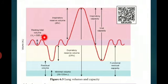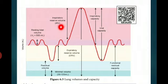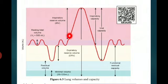Next we move to inspiratory reserve volume. The inspiratory reserve volume is the additional volume of air we are inhaling forcefully. This is called inspiratory reserve volume, and its value is 2500 to 3000 milliliter.